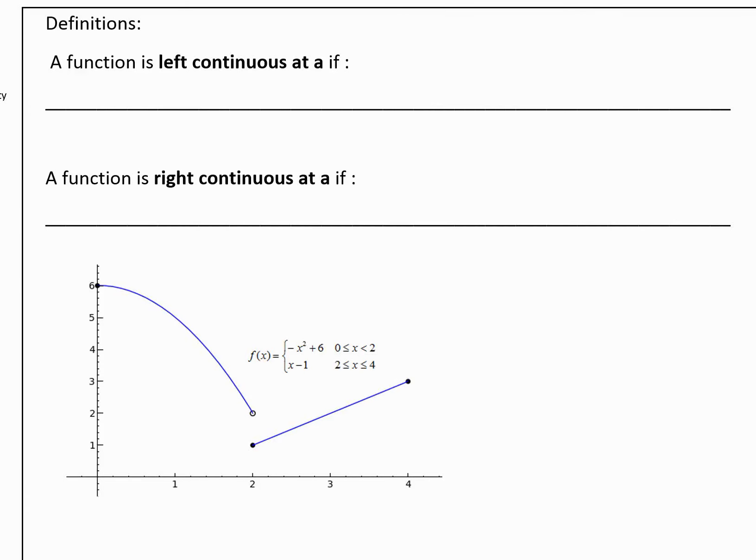Now we're going to define two more terms: being left continuous at a value and being right continuous. Just like we had right-handed and left-handed limits when we didn't have the whole limits, here we can talk about something being left continuous or right continuous if it's not actually continuous at the point. If something is continuous at a point, it'll be both left-handed and right-handed continuous as well.